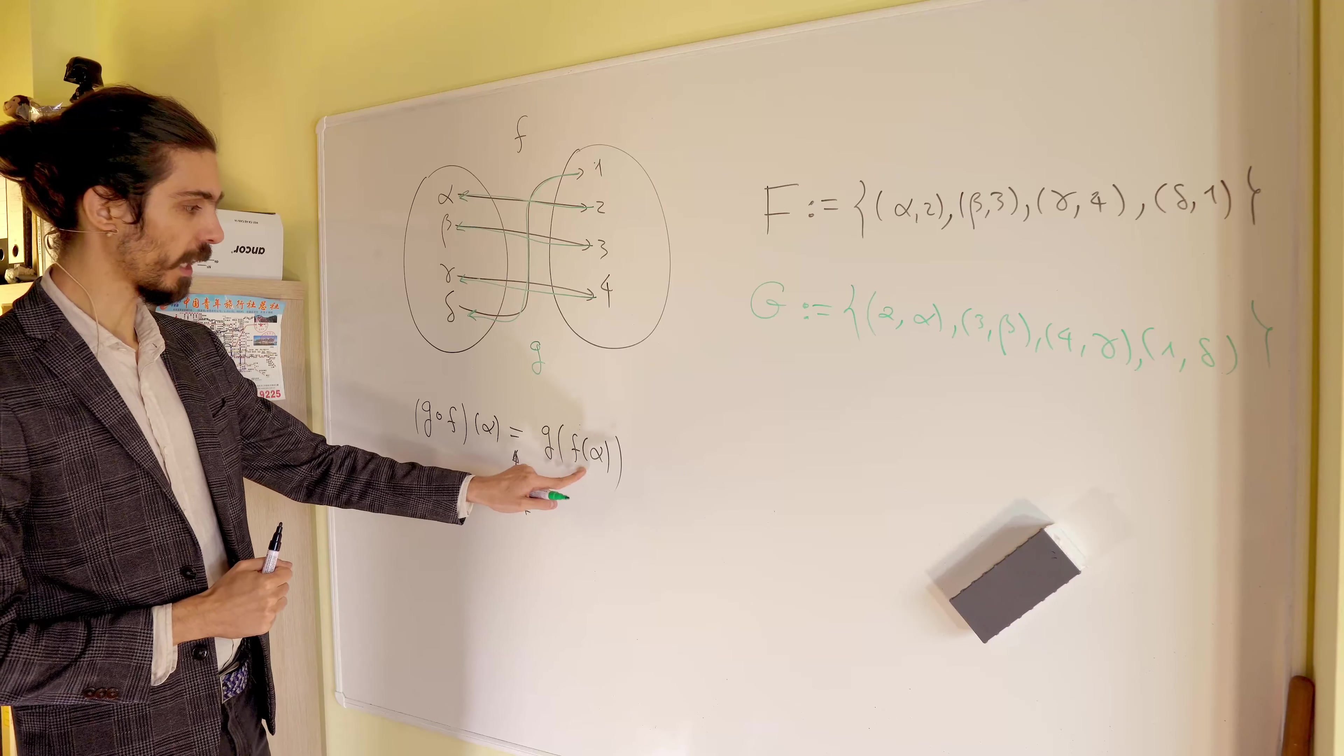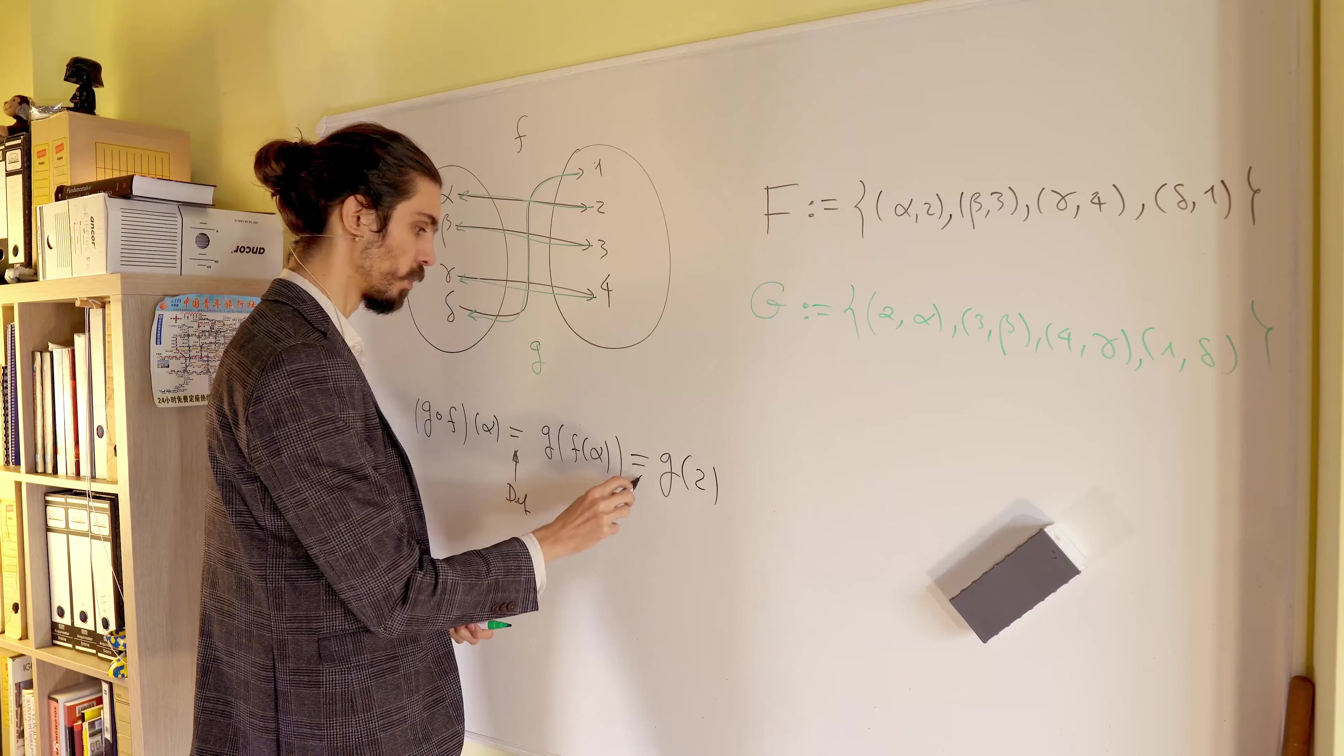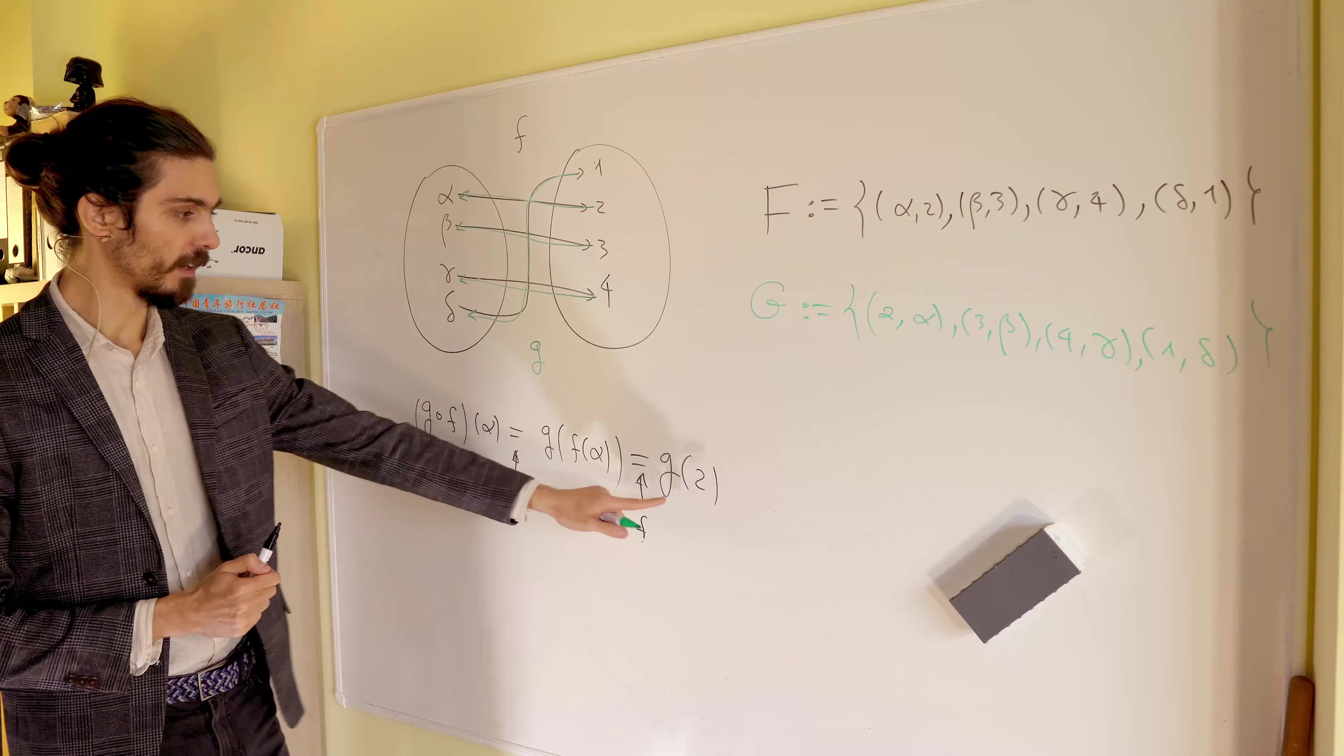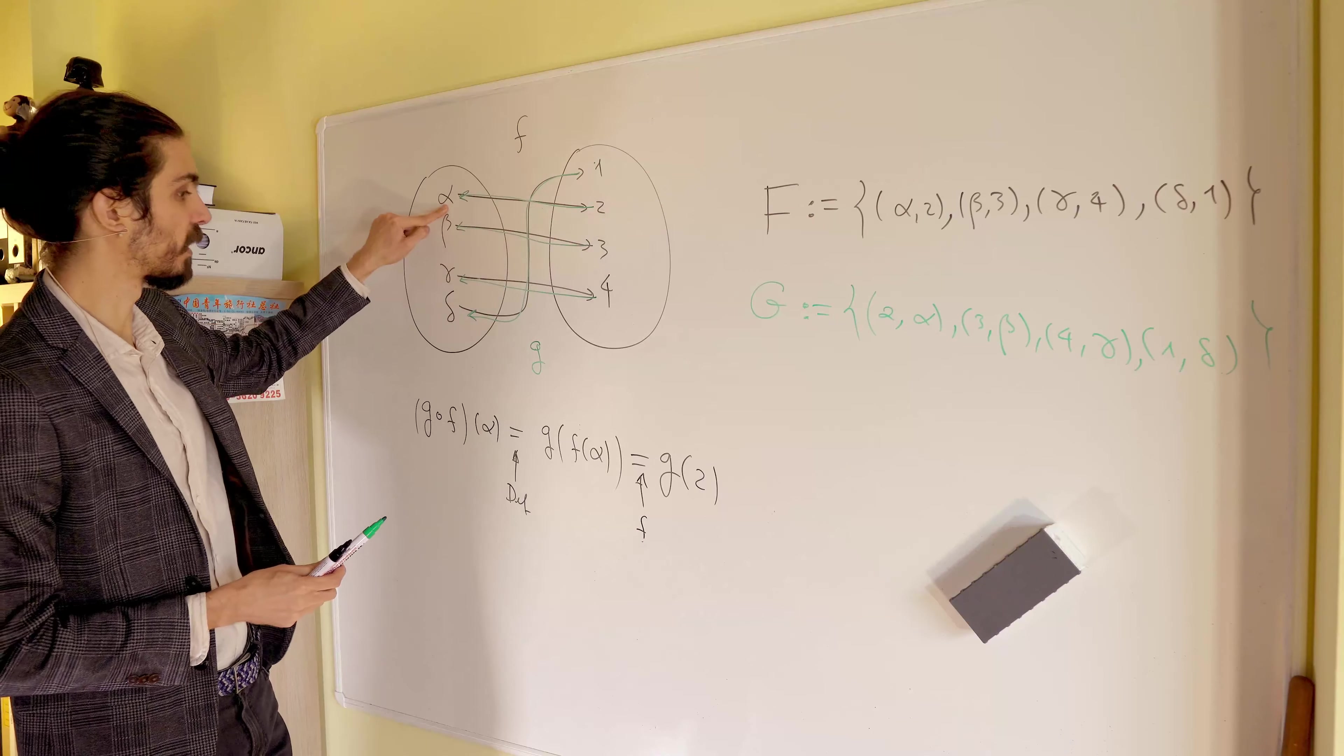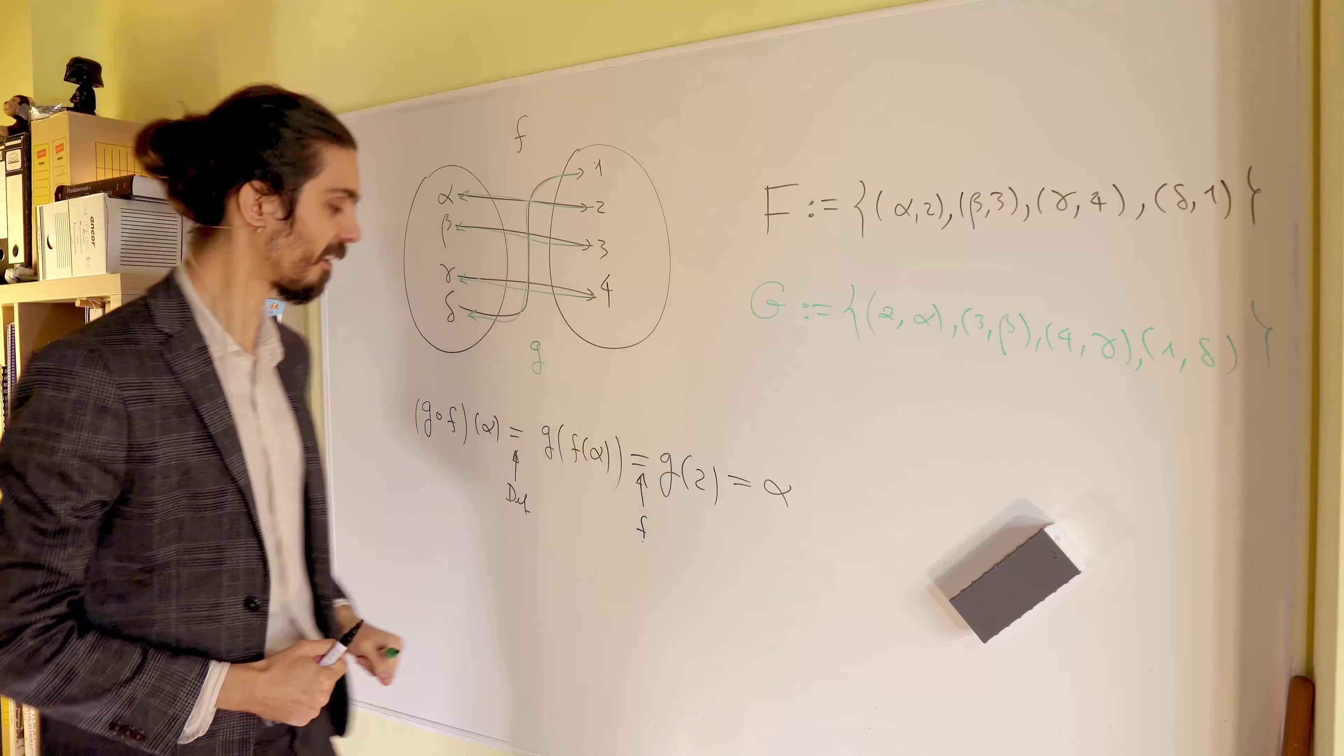Now, but what is f of alpha? Well, f of alpha is 2. So this is the same thing as g of 2. We use here, at this step, the fact that we know explicitly the function f. And finally, g of 2. What is g of 2? Well, g of 2, we follow the arrow, so it's alpha again. Okay? So the input to the composite function is alpha, and the output is again alpha.